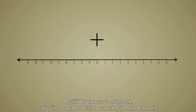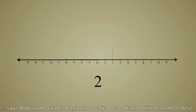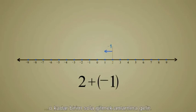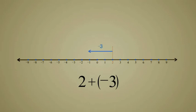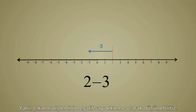Adding a positive integer means moving that number of units to the right. For example, if we add a positive integer to the number 2, we start at 2 on the number line and then move that number of units to the right. Adding a negative integer means moving that number of units to the left. In fact, adding a negative number is exactly the same thing as subtracting a positive number. So we can think of subtraction as just the addition of a negative number.